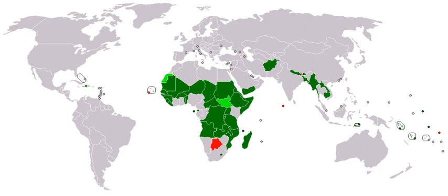Developing countries tend to have some characteristics in common. For example, with regards to health risks, they commonly have low levels of access to safe drinking water, sanitation and hygiene, energy poverty, high levels of pollution such as air pollution, indoor air pollution, and water pollution, a high proportion of people with tropical and infectious diseases, neglected tropical diseases, and a high number of road traffic accidents.